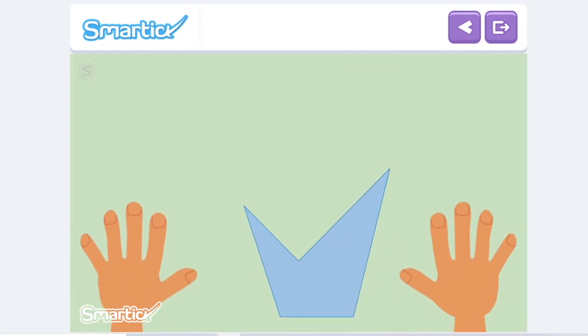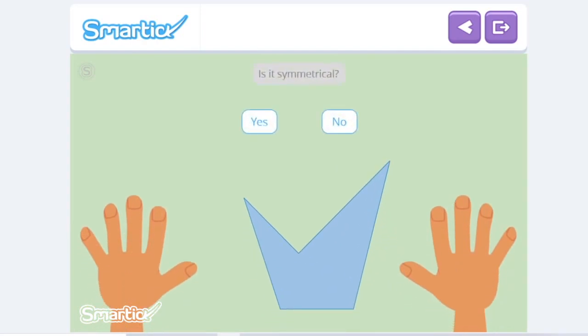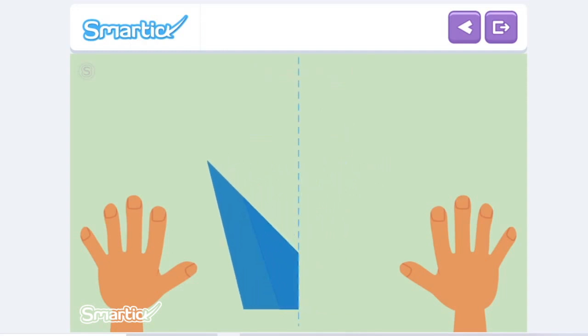Finally, look at Leo's figure. Is it symmetrical? Exactly! There is no line where the figure can be folded and the two parts will match up. So Leo's figure is not symmetrical.